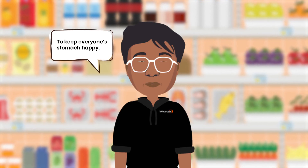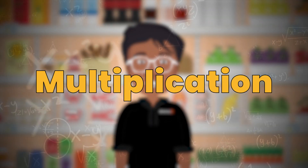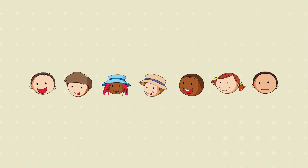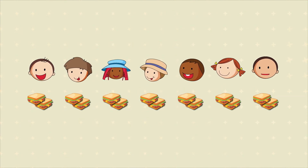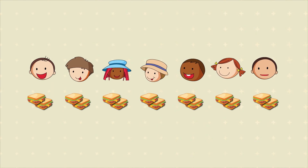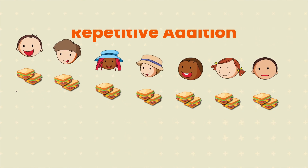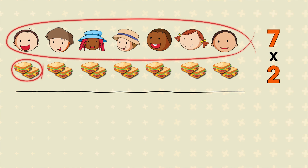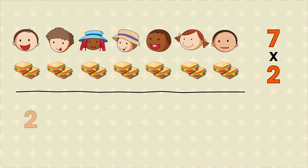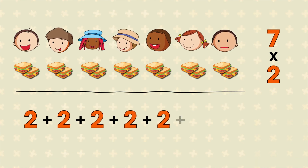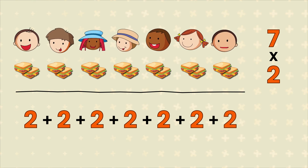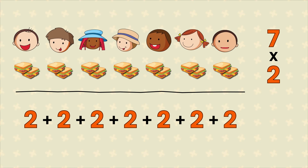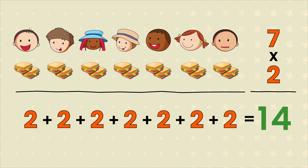To keep everyone's stomach happy, I think multiplication will come to the rescue. Since Sally has invited 7 friends, let's see what it looks like pictorially. Each of her friends will eat 2 sandwiches. Multiplication is basically repetitive addition. We can read this as 7 into 2, or 7 multiplied by 2. In simple words, it is 2 plus 2 plus 2 plus 2 plus 2 plus 2 plus 2. To calculate the total number of sandwiches, we need to multiply 7 by 2, which is a repetitive addition of 2. We get 14 as the answer.